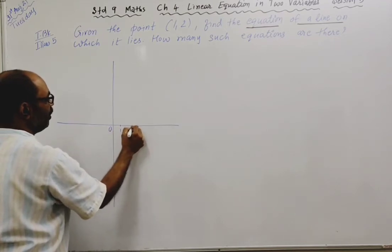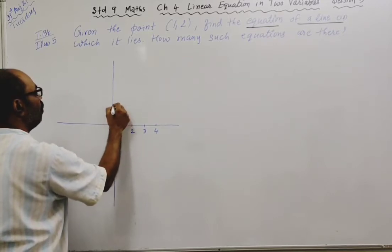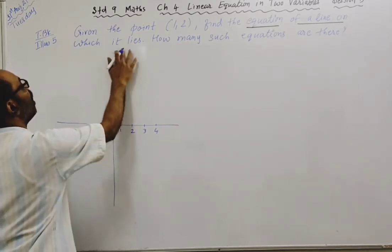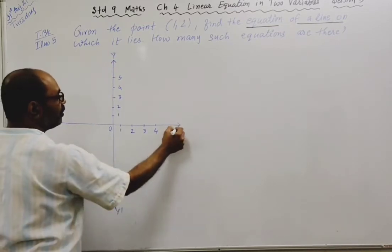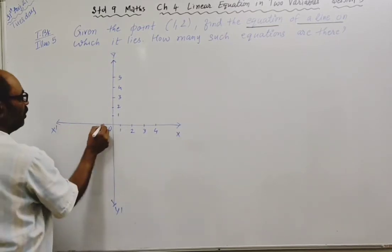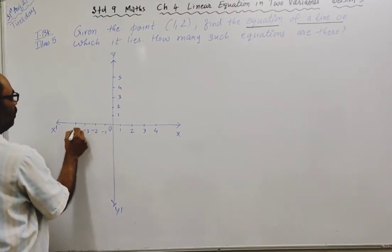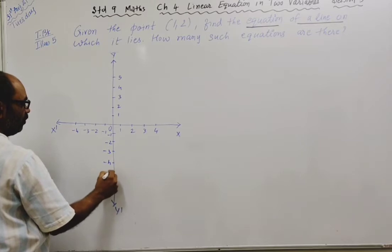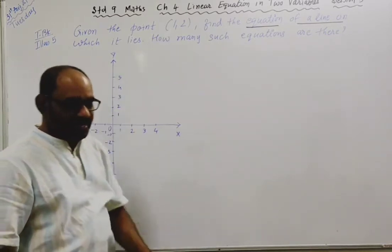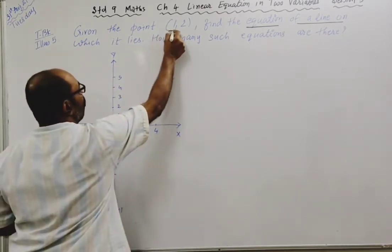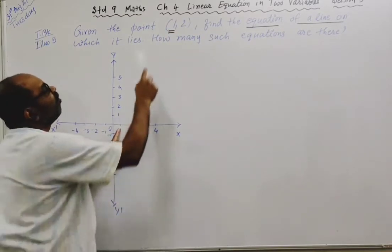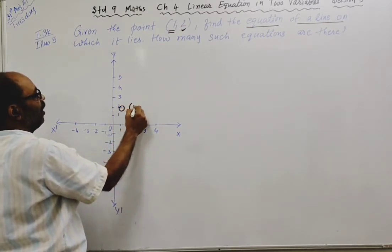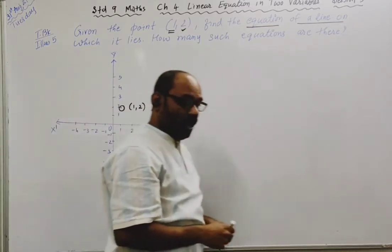Here is the Cartesian coordinate plane. This is origin. Mark 1, 2, 3, 4 and so on. This is y and y dash, this is x and x dash. Minus 1, minus 2, minus 3, minus 4, minus 5 and so on. Which point is in the plane? (1, 2). The x coordinate is 1, y coordinate is 2, so that point is going to be here.